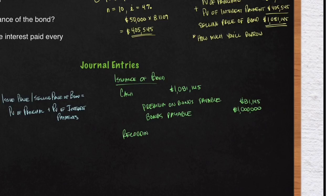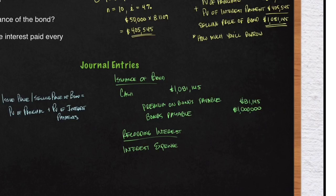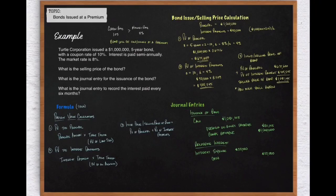The second journal entry is recorded every six months for the semi-annual interest payment. You debit Interest Expense for fifty thousand dollars — the interest payment amount. You then credit Cash for fifty thousand dollars, since you are paying out interest. That covers the journal entries for both issuing the bond and recording the interest payments.